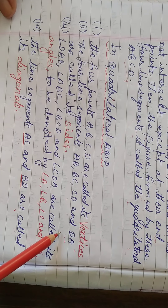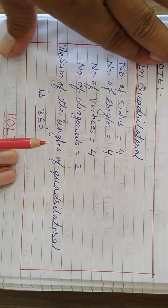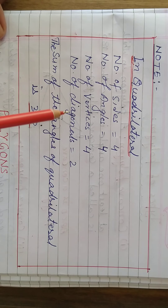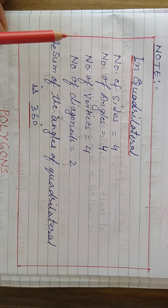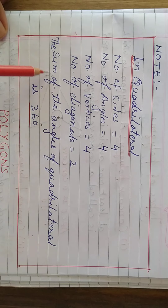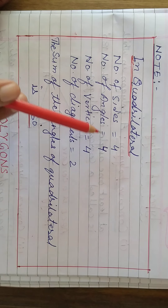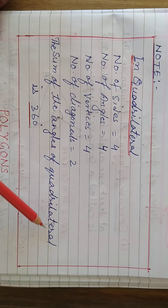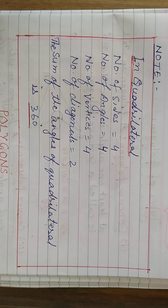Be careful and learn it. Some important things to remember: number of sides — four; number of angles — four; number of vertices — four; number of diagonals — two. The sum of the angles of a quadrilateral is 360 degrees. This is the basic information of a quadrilateral.